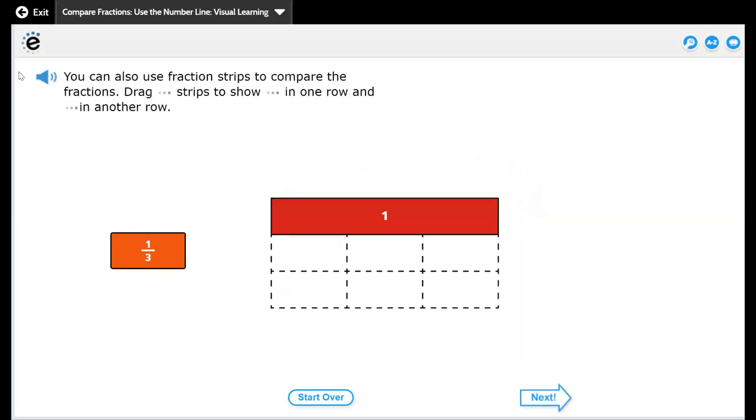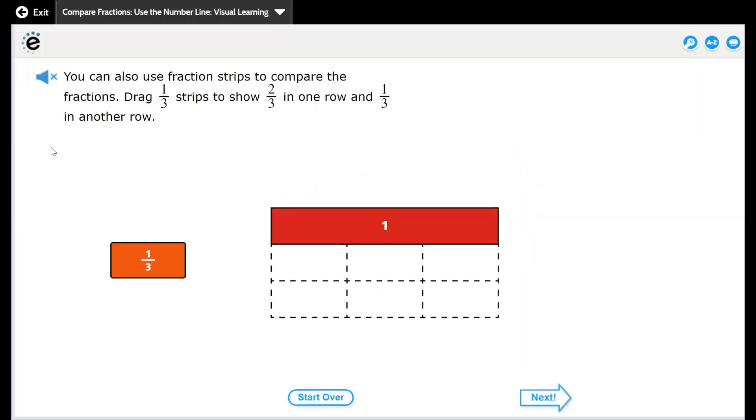You can also use fraction strips to compare the fractions. Drag one-third strips to show two-thirds in one row and one-third in another row. So this is two-thirds in the first row and the second row one-third. So two-thirds is greater than one-third.